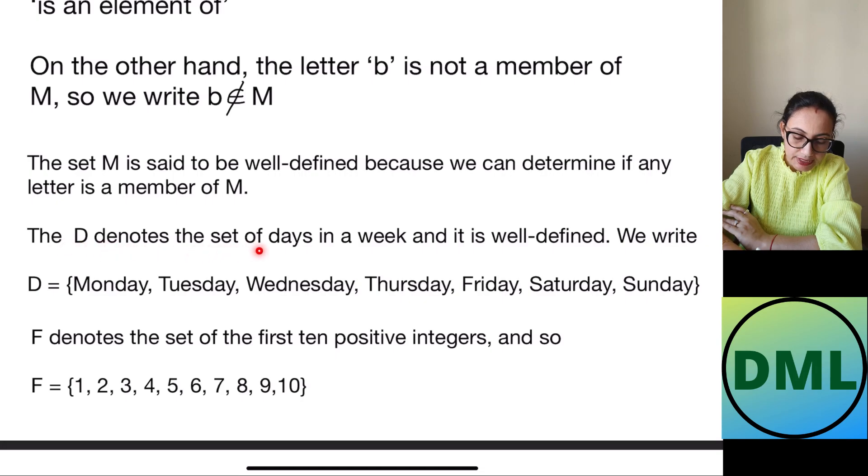The D denotes the set of days in a week and it is a well defined set. Why we can say that the days of the week is a well defined set?